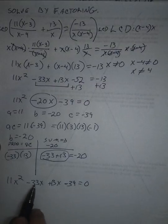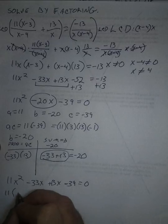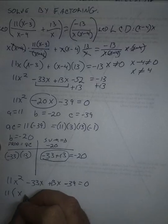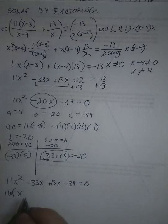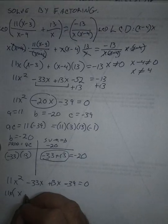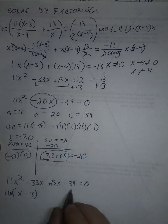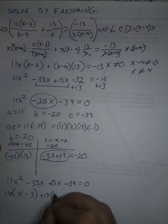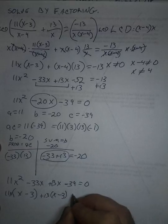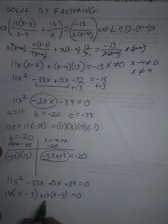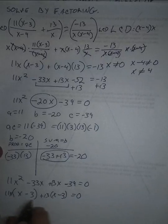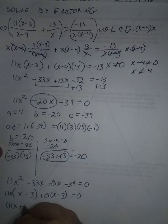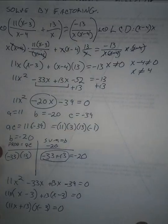At this point I can factor out an 11x, and that leaves me with (x minus 3) here. And here I can factor out a 13. This is plus 13, and this is going to be (x minus 3). That equals 0. And then finally I factor out the term in parentheses, (x minus 3), and I get (11x plus 13) times (x minus 3) equals 0.